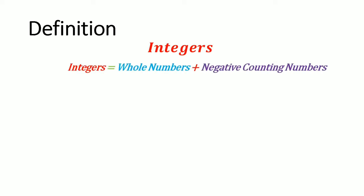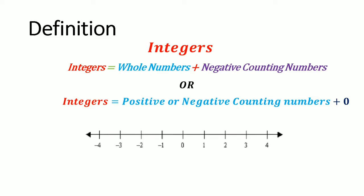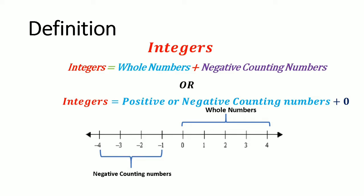Integers are whole numbers plus negative counting numbers. Or you can describe this as positive or negative counting numbers plus zero. Let us use a diagram to illustrate the meaning. If you had an integer number line, these are your whole numbers and this is your negative counting numbers. So you can see along the number continuum, integers are whole numbers and negative counting numbers.